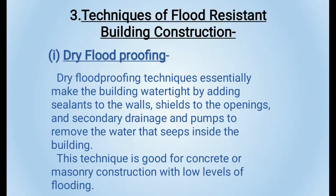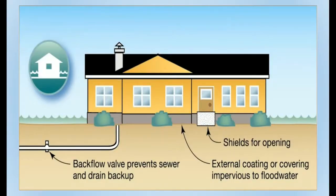Now coming to the techniques of flood-resistant building construction. The first one is dry flood proofing. In this, the building is made watertight by shielding the openings, adding sealant to walls, and by providing a pump to drain water that seeps inside. This can be constructed by concrete or masonry. In the picture we can see the shield for openings, the backflow preventive sewer and drain breaker, and external coating.